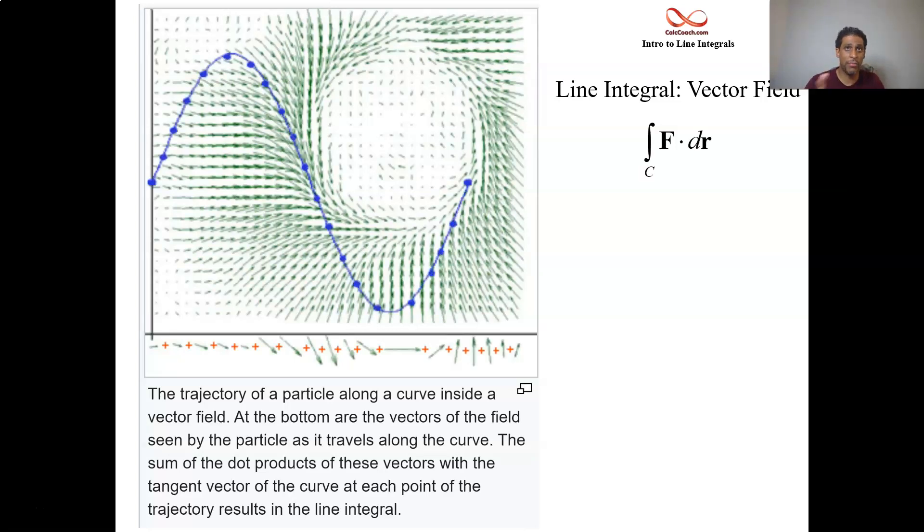So the curve isn't explicitly marked off. Oh, there it is at the end, it's finally marked off. Larger arrows represent a stronger magnitude, so we're accumulating these vectors dotted with our velocity vector.